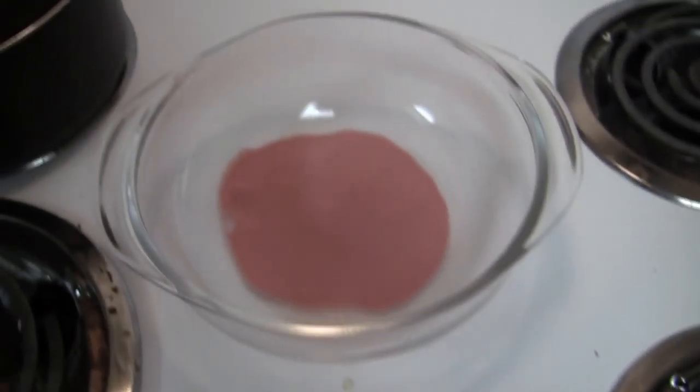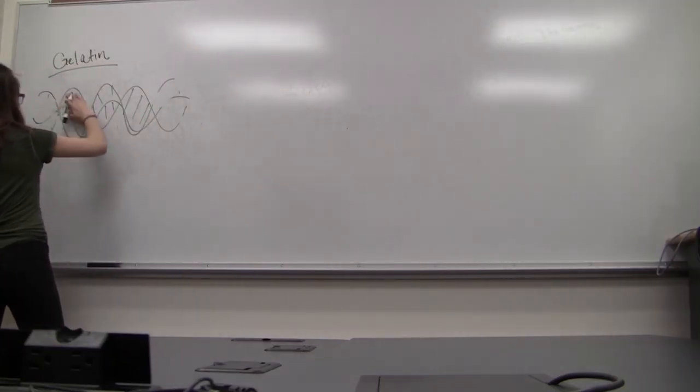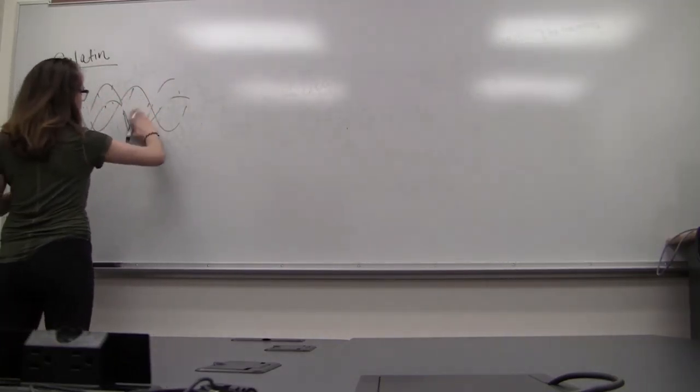In the case of Jell-O, the addition of boiling water breaks the weak intermolecular bonds and allows the amino acids to move freely throughout the water.